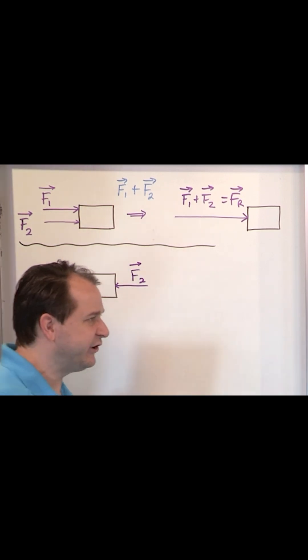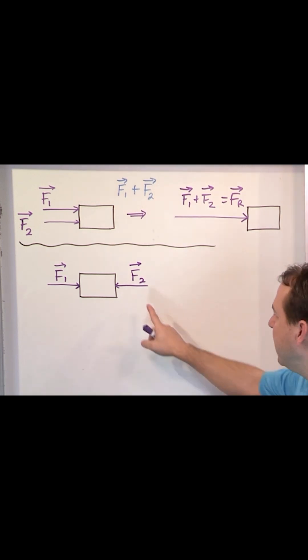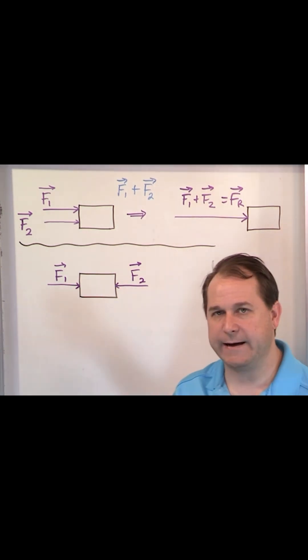If I have a box and I'm pushing this way, and then I have another box and I'm pushing this way, and because the lengths of the arrows are the same, what's going to happen to the box?